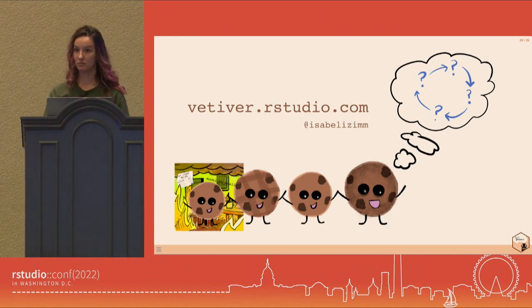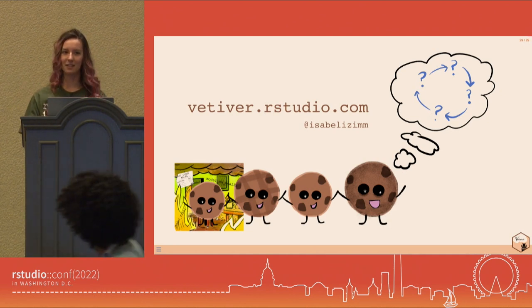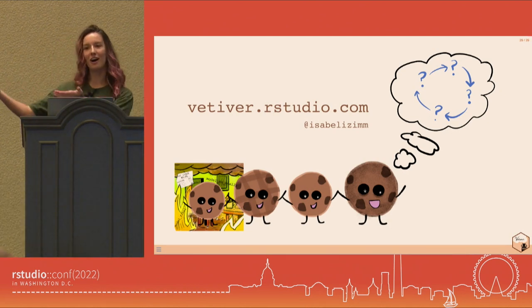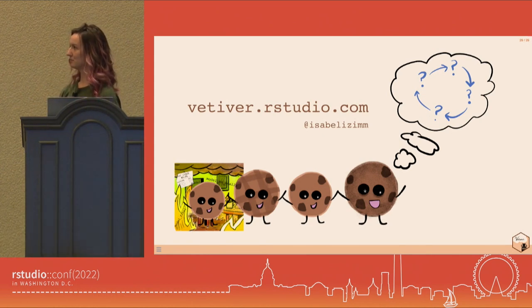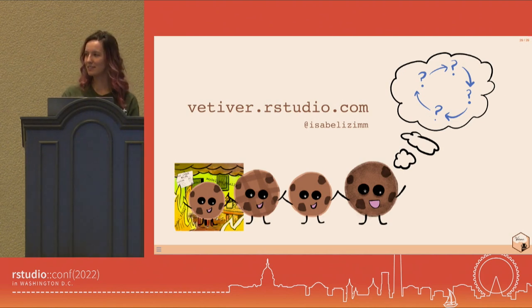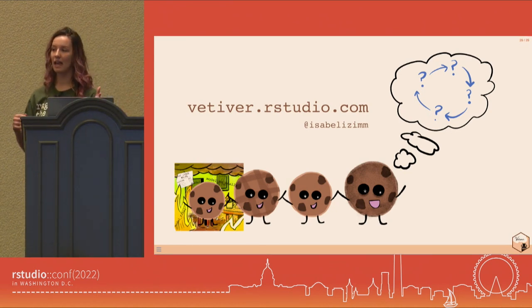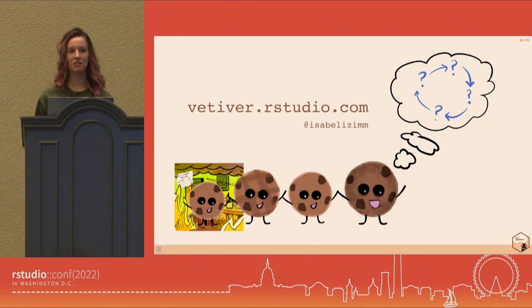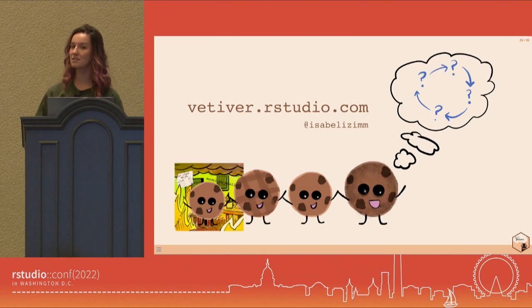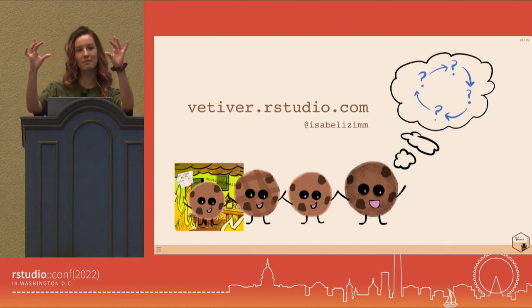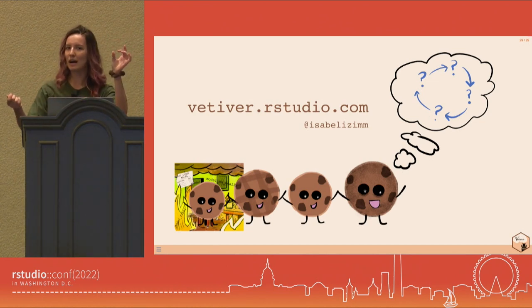Q&A: How well does Vetiver play with RStudio/Posit Connect? Very well — there are easy one-liners like deploy_rsconnect() that ship your model off into the Connect world. Can you deploy multiple Vetiver models to different routes on the same API server? It depends — you can have multiple different endpoints running at once, which may be a better solution. You can also write custom endpoints, for example adding pre-processing or transforming outputs like multiplying by 100 to get a percentage. That custom endpoint capability is also part of Vetiver.